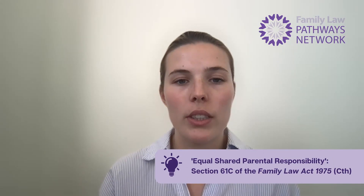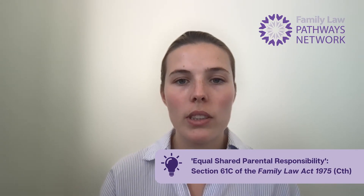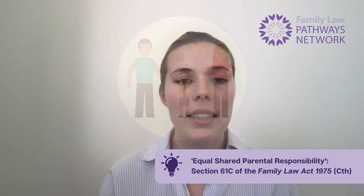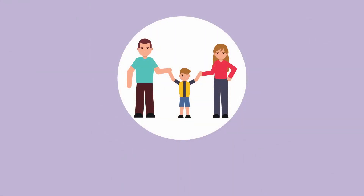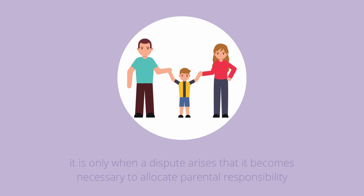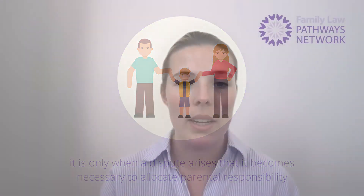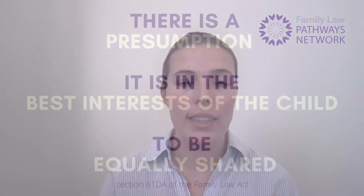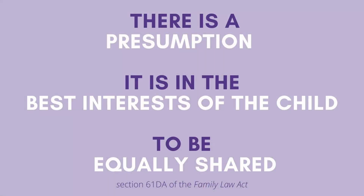As a starting point per section 61C, parental responsibility is ordinarily shared between parents and does not automatically alter when there is a change in the parent's relationship, such as separation or marriage. It is only when a dispute arises that it becomes necessary to allocate parental responsibility. Where such a dispute arises and a parenting order is applied for, the court starts with the presumption that it is in the best interest of the child for parental responsibility to be equally shared.